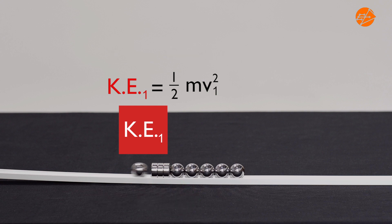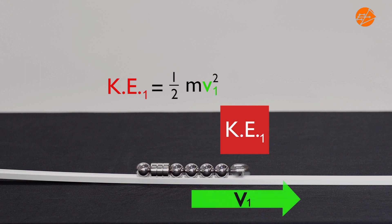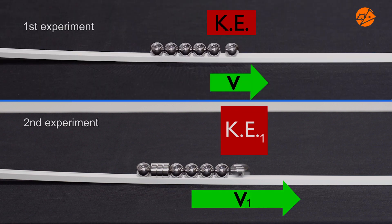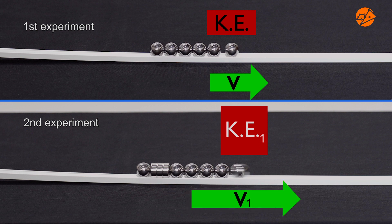Energy is transferred from the rolling ball bearing through the five ball bearings. The last ball bearing then receives all the energy. Assuming no energy is lost or added, it carries the same amount of kinetic energy, KE1, and therefore the same velocity, V1. The kinetic energy of the last ball in the second experiment, KE1, is larger than the kinetic energy of the last ball in the first experiment, KE. Therefore, the velocity of the last ball in the second experiment, V1, is also higher than the velocity of the last ball in the first experiment, V.